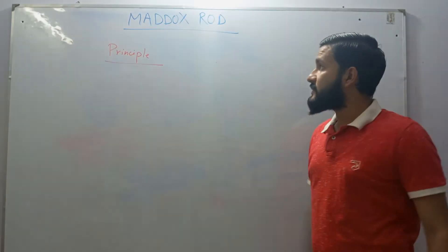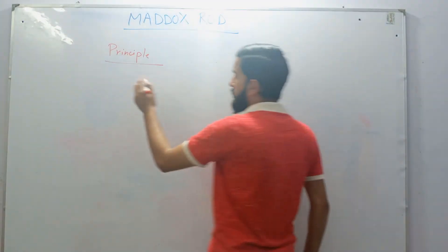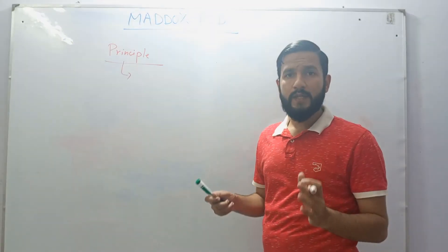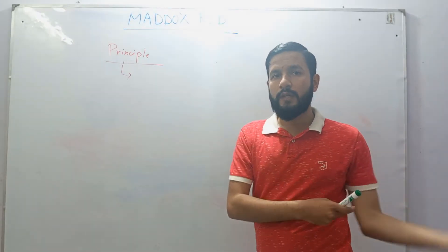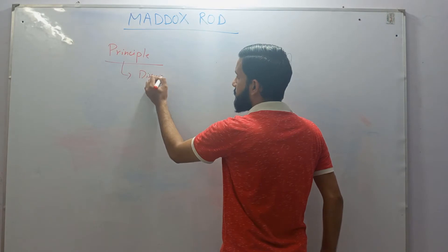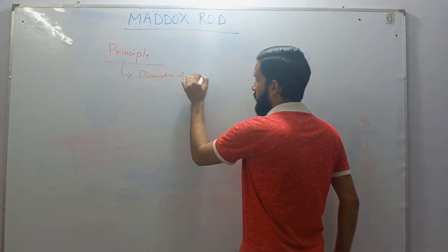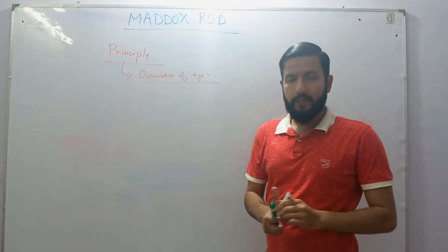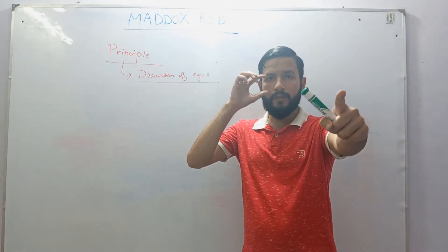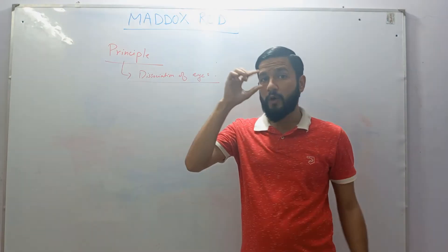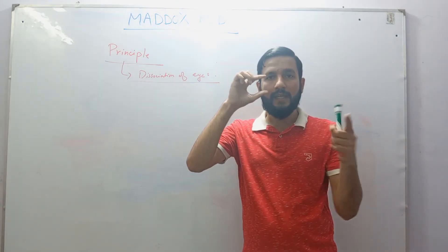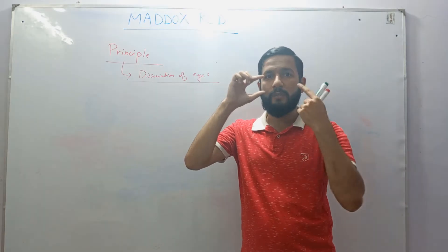The next is the principle of the Maddox rod. The Maddox rod is based on the principle of dissociation of eyes. You dissociate both eyes so that any deviation, whether manifest or latent, can become visible. Dissociation is achieved by placing the Maddox rod in front of one eye while the patient views a light source. The light source is converted into a line image by the Maddox rod, so the eye in front of which the Maddox rod is placed will see a line image, and the other naked eye will see a point image of the light source.